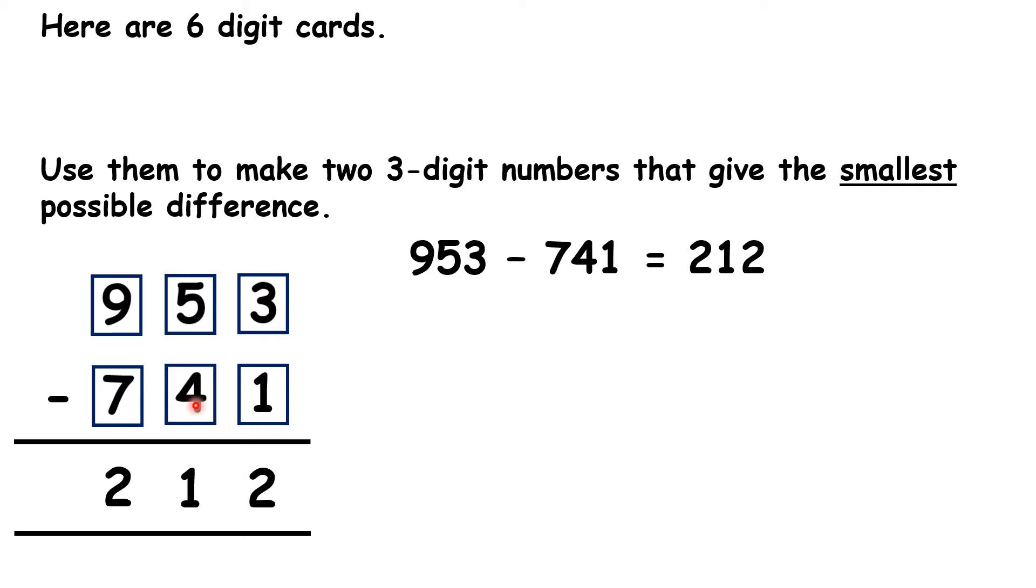So first, let's try putting the 4 and 3 in our hundreds column. If we move the cards around, now we have 459 minus 371, and that gives us a difference of only 88. So that's a much smaller difference than what we had before.